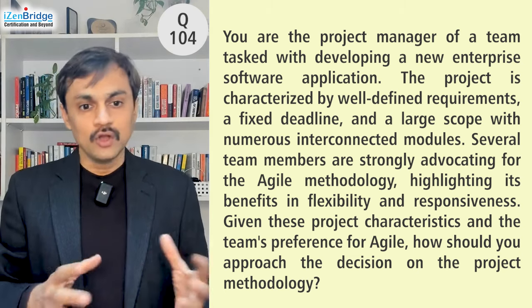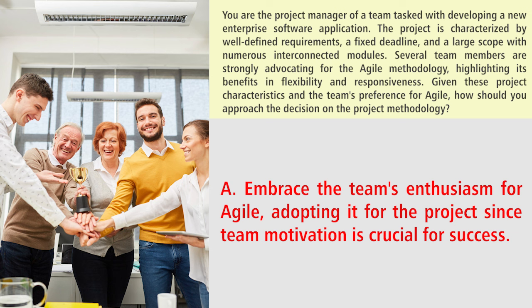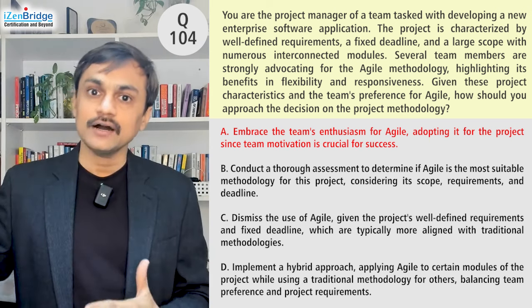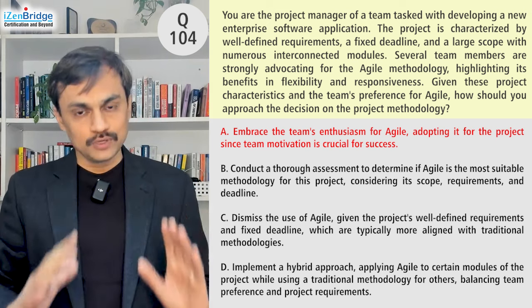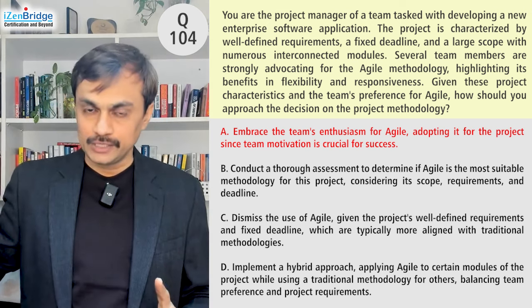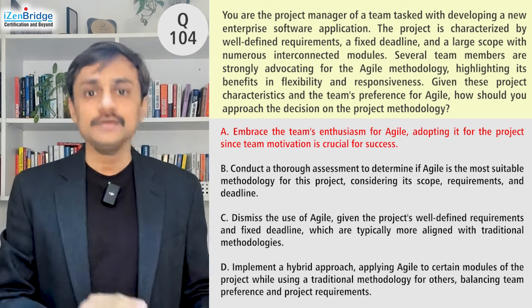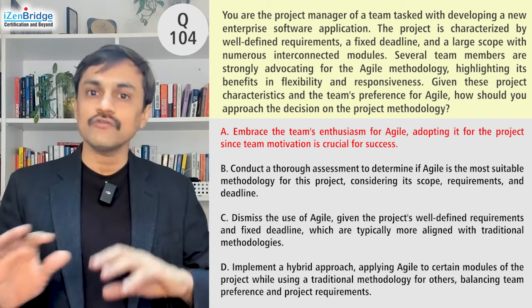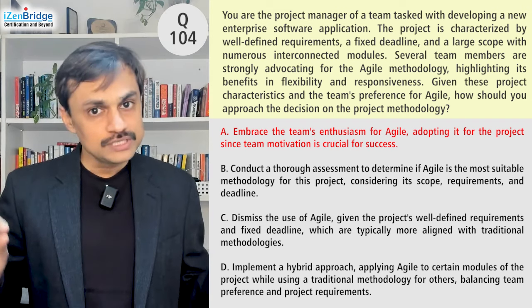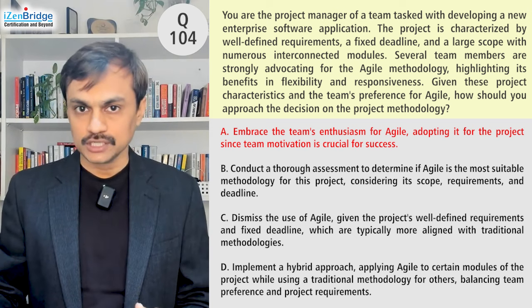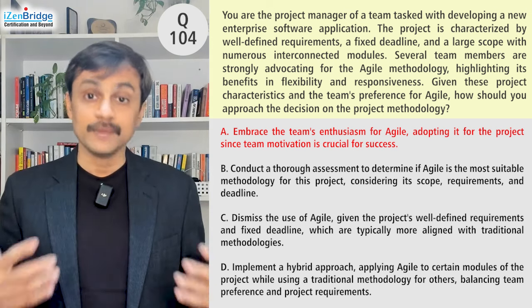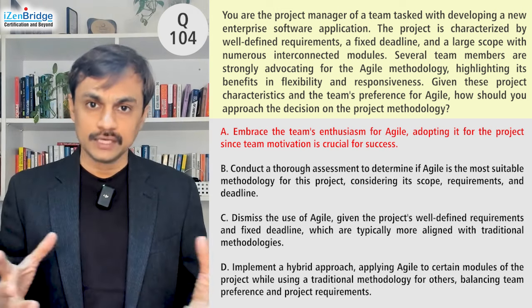Option A: Embrace the team's enthusiasm for Agile, adopting it for the project since team motivation is crucial for success. It's an option, but I don't just get carried away by the team's enthusiasm. I am responsible for ensuring delivery of project value and facilitating conversations with teams and stakeholders. We are not likers or dislikers of any process approach — we need to select the one which helps the project achieve its objectives. Option A is a little dangerous because it says just listen to the team; I need to demonstrate leadership instead.